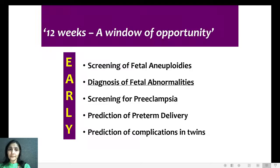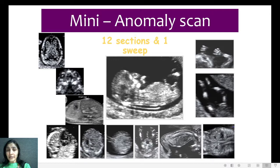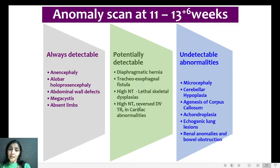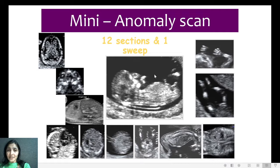Coming to the second objective: diagnosis of fetal abnormalities. We need about a dozen sections and one sweep to detect all anomalies possible during the first trimester. Some anomalies are always detected — such as anencephaly, alobar holoprosencephaly, abdominal wall defect, megacystis, and absence of limbs. Some are potentially detectable, such as diaphragmatic hernia, tracheoesophageal fistula, and cardiac anomalies such as hypoplastic left heart. And some will be undetectable, such as microcephaly, cerebellar hypoplasia, agenesis of corpus callosum, and renal abnormalities.